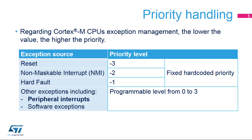Regarding the STM32G0, the NMI is caused by an SRAM parity error, a flash double ECC error, or clock failure. The priority of any of the 32 peripheral interrupt requests is programmable in a dedicated priority field located in the Cortex-M0+ NVIC registers.